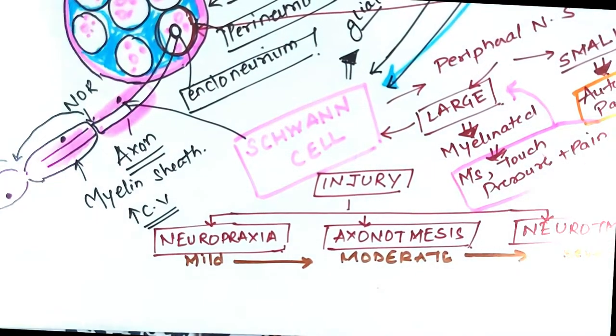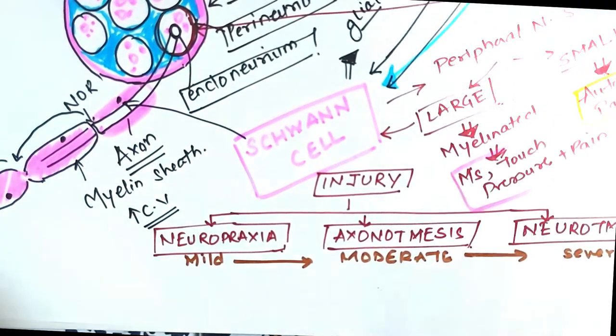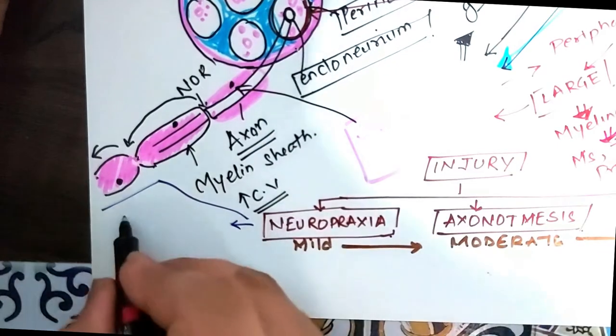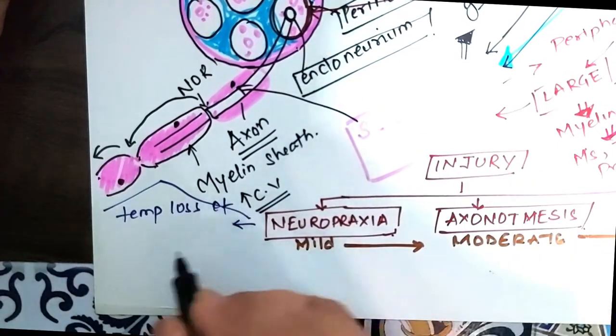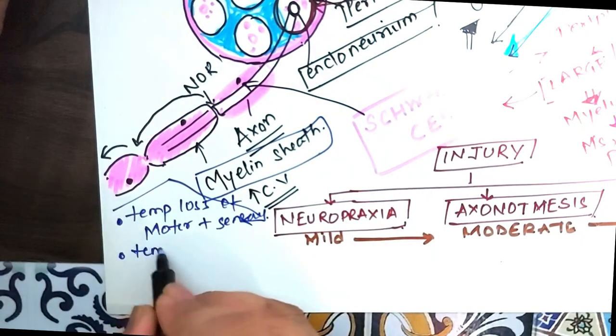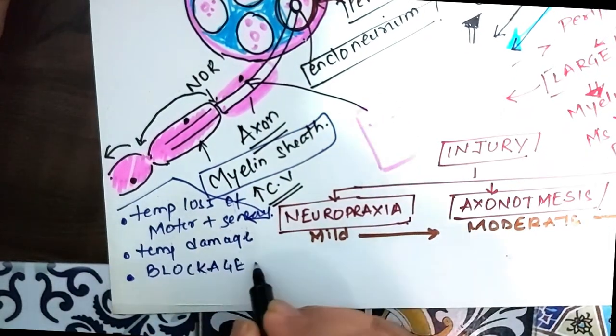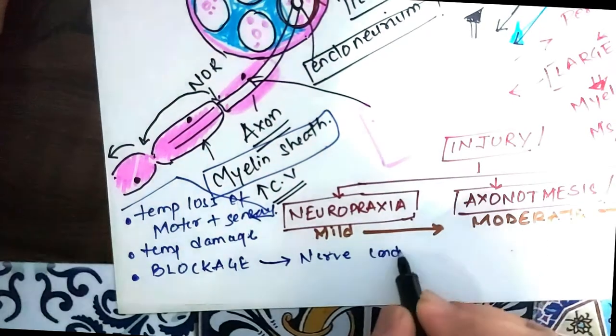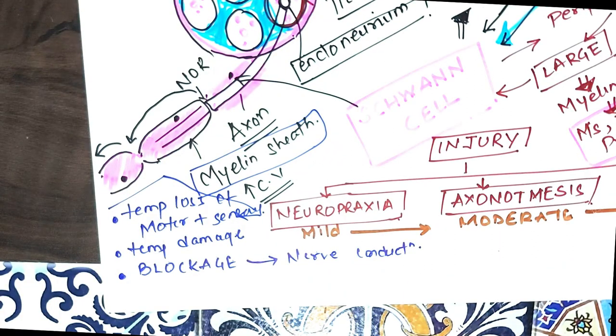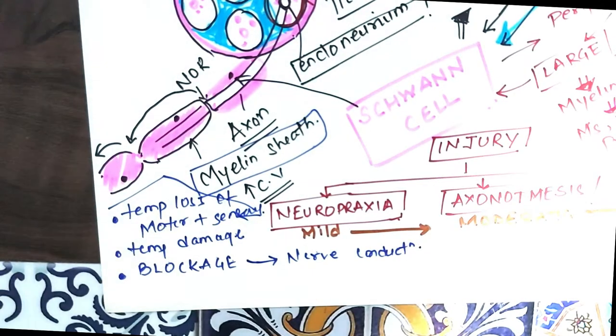Now let's talk in detail about the most common neuropraxia, which is often seen in the general population as well as in sports athletes. Patients with neuropraxia often complain of temporary loss of motor plus sensory sensation. Now this loss happens due to damage to the myelin sheath which is temporary. This temporary damage happens due to blockage which occurs because of compression or any kind of blunt injury to the peripheral nerves.